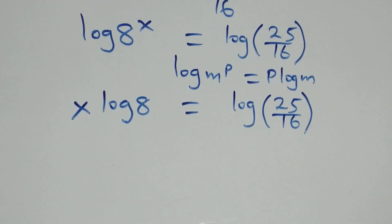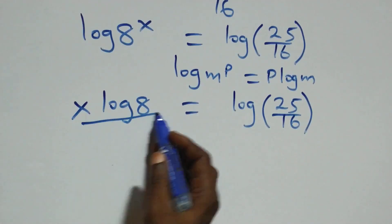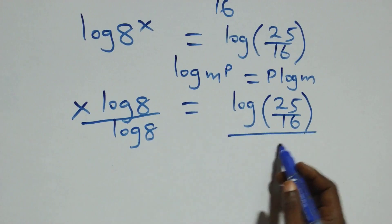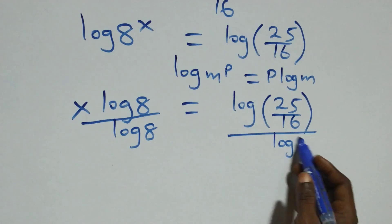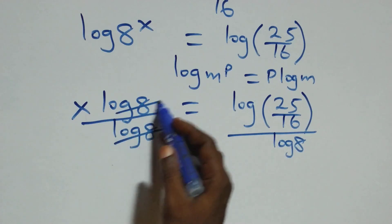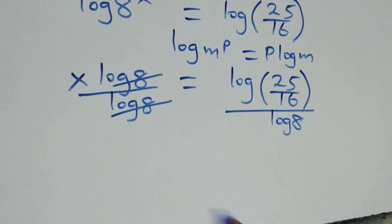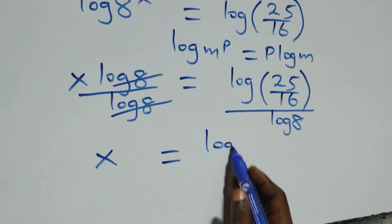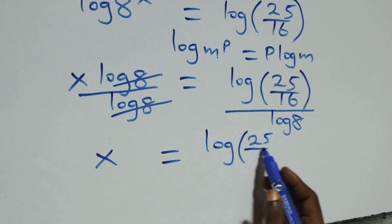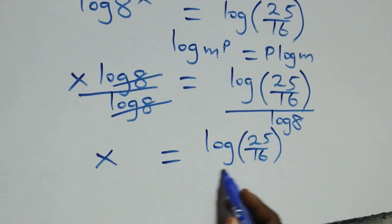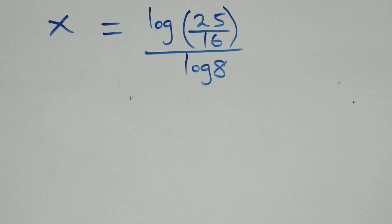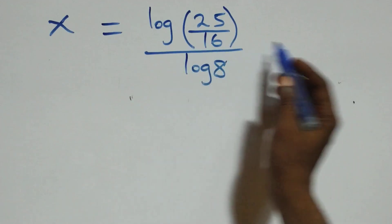At this step, we divide both sides by log 8 — divide this side by log 8 and also divide the other side by log 8 — which implies log 8 cancels, and we have x left, which equals log(25/16) divided by log 8.